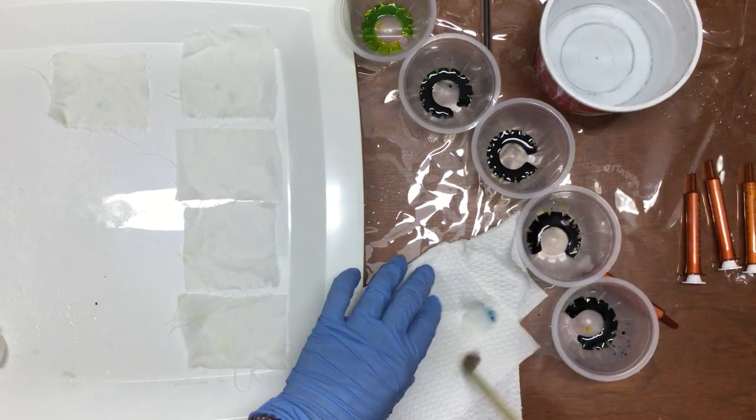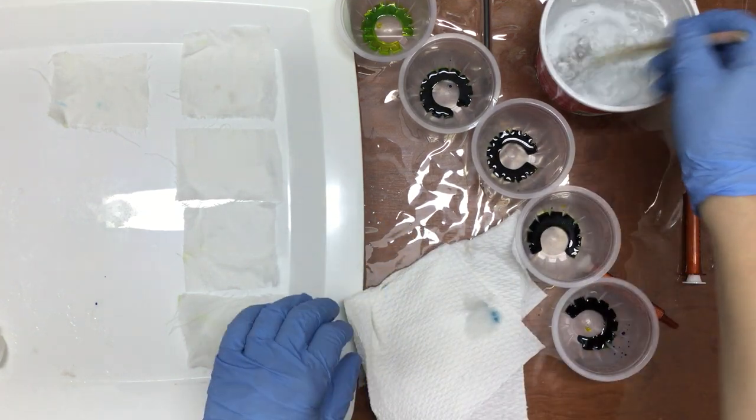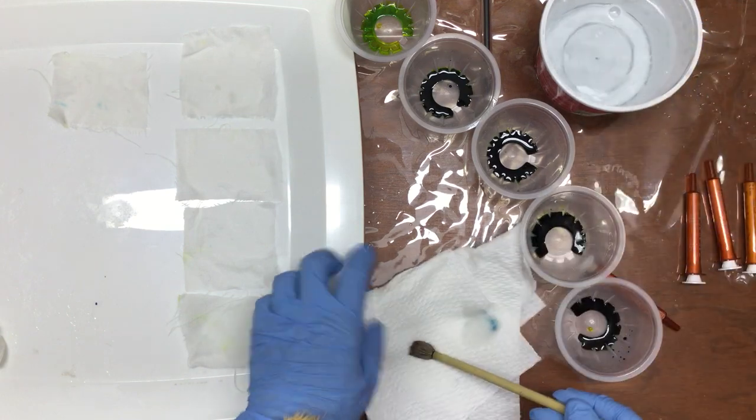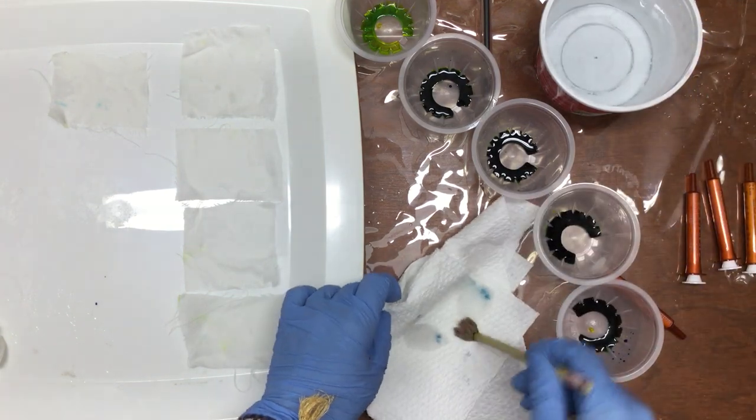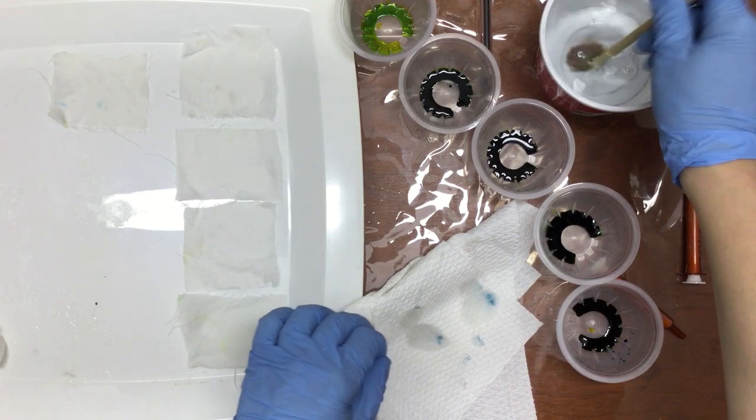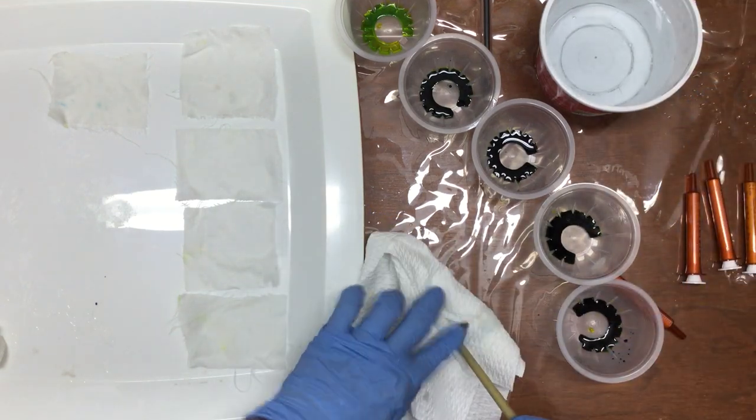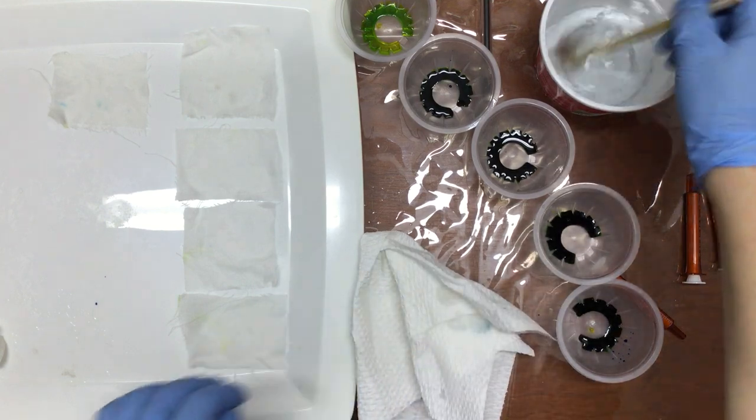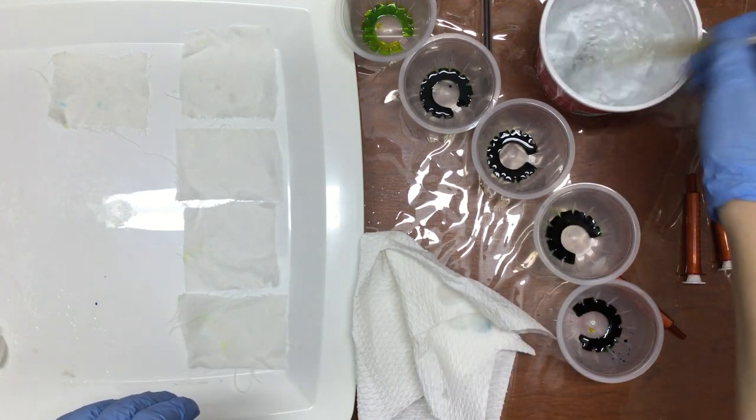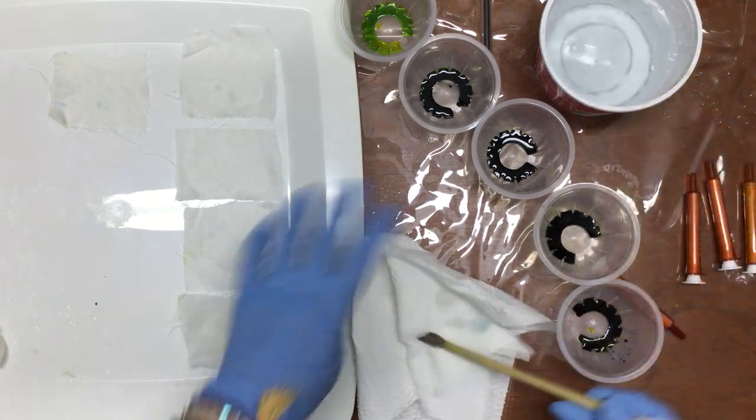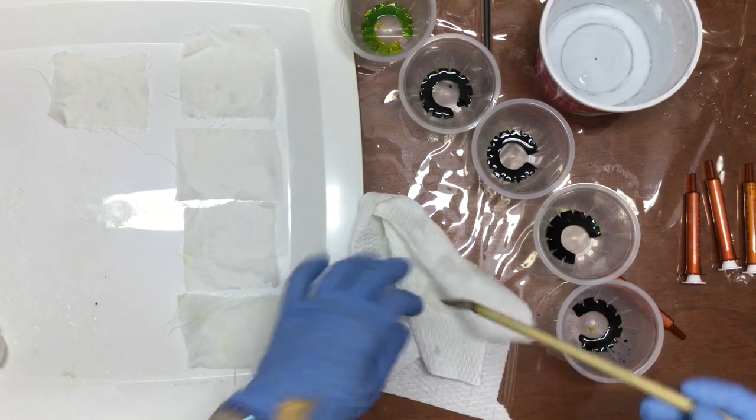I use a bit of paper towel to blot things dry. There's still some blue in that brush. When you're working with such tiny amounts, the amount of water that's in your brush can dilute things.